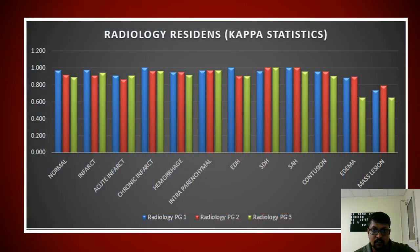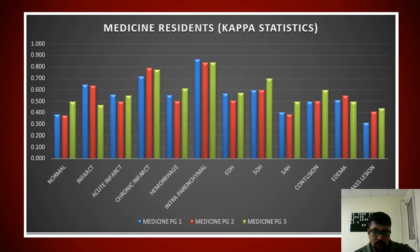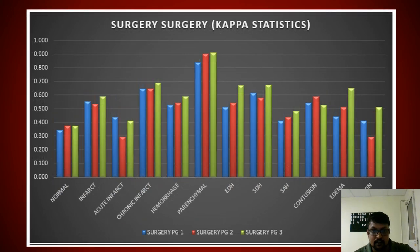These are the kappa statistics for all CT images taken and diagnosed by the residents — including separate kappa statistics tables for the medicine residents and for the surgical residents across the various CT scan diagnoses.